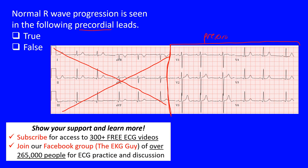When we talk about R wave progression, what we're simply saying is that we're looking from V1 all the way up to V5. From V1 through V5, you should see an increase in R wave amplitude, or you should see an increase in the R to S ratio. So that's what it is — let's look at why that's the case.